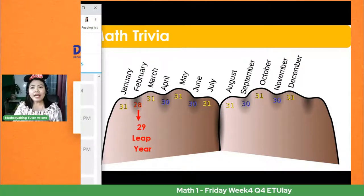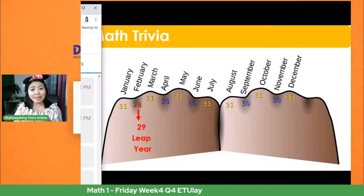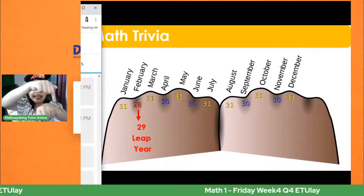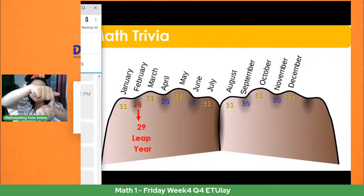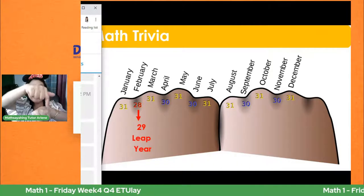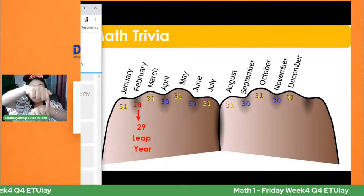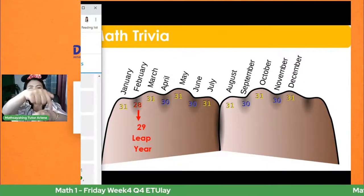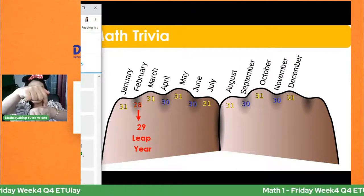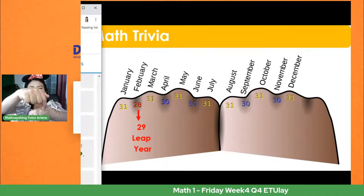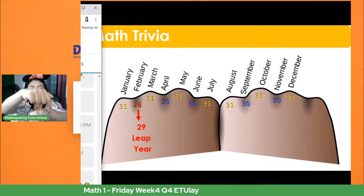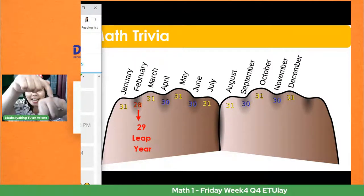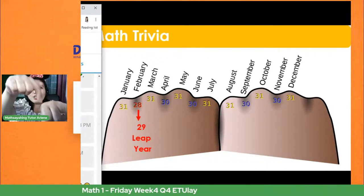Tandaan, labing dalawang buwan. Ito ang technique para mas madali nating matandaan: yung unang knuckle, ito ay January. Yung gitna, sa pagitan ng dalawang knuckle, yun ang February. January, February, o yung pangalawa nating joint, March, April, o yung gitna ulit, May, June, July.